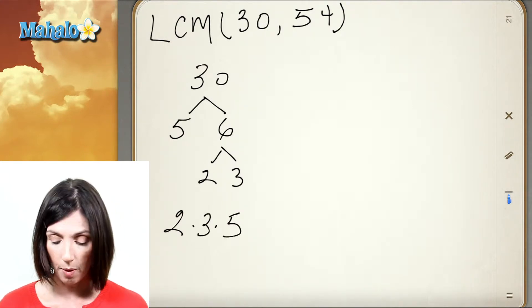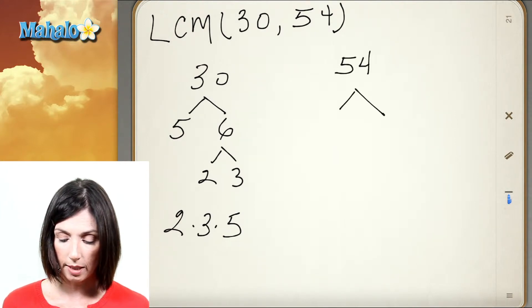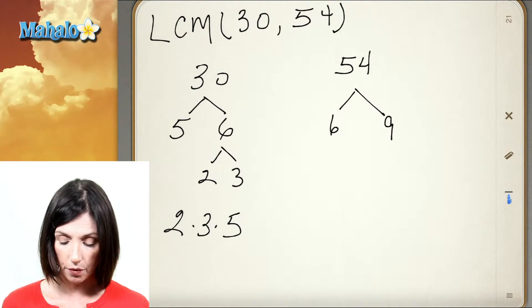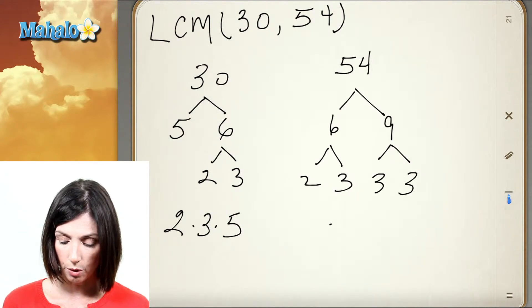And now let's find the prime factorization of 54. So 54 is 6 times 9. 6 factors into 2 times 3. 9 factors into 3 times 3. So I get 2 times 3 cubed.